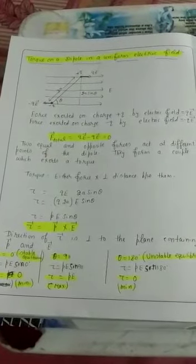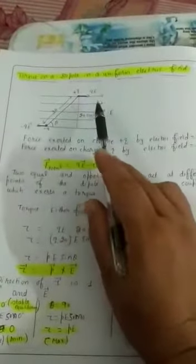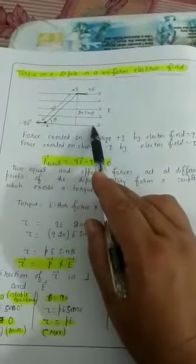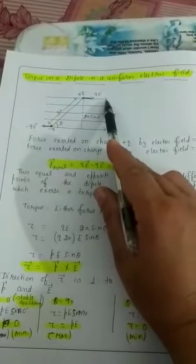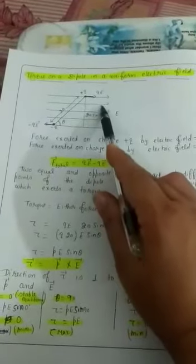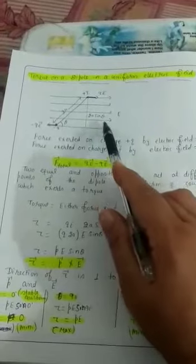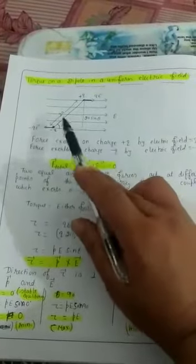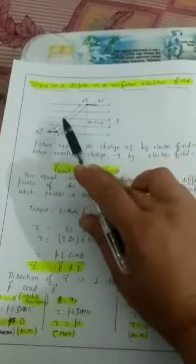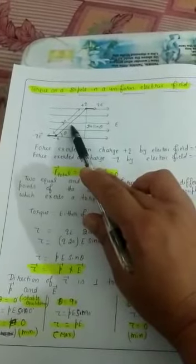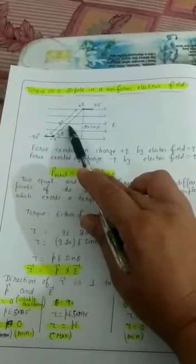A uniform electric field is represented by parallel, straight, equidistant lines. In this diagram, we are showing a uniform electric field represented by parallel, straight, equidistant lines. Let an electric dipole having two charges — a negative charge and a positive charge — with the length of the dipole being 2A, be placed in this electric field.